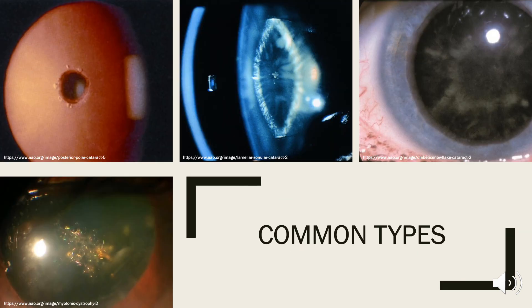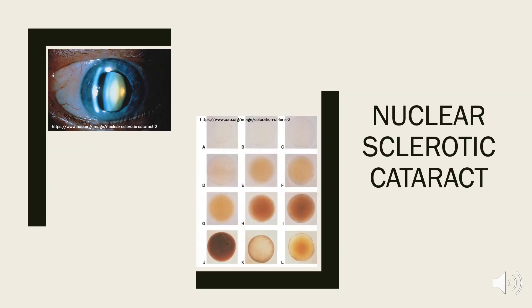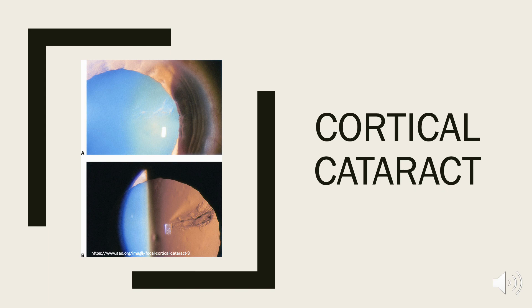Although there are many types of cataracts, we'll review the most common. Nuclear sclerotic cataracts occur as the lens's nucleus yellows and hardens over time. The image on the top left shows an angled slit lamp beam passing through the cornea, visible as a thin beam of light on the left side, striking the lens on the right and highlighting the central green-brown color of the nucleus. The image on the bottom right shows increasing yellow to brown discoloration of the lens over time. Cortical cataracts occur as the fibers of the lens's cortex, which surrounds the nucleus, become opacified. They typically don't cause visual disability until they approach the center of the visual axis. The top image illuminates the spoke-like opacity in the lens, and the bottom image uses retro-illumination to highlight the opacity protruding from the periphery into the center of the lens.